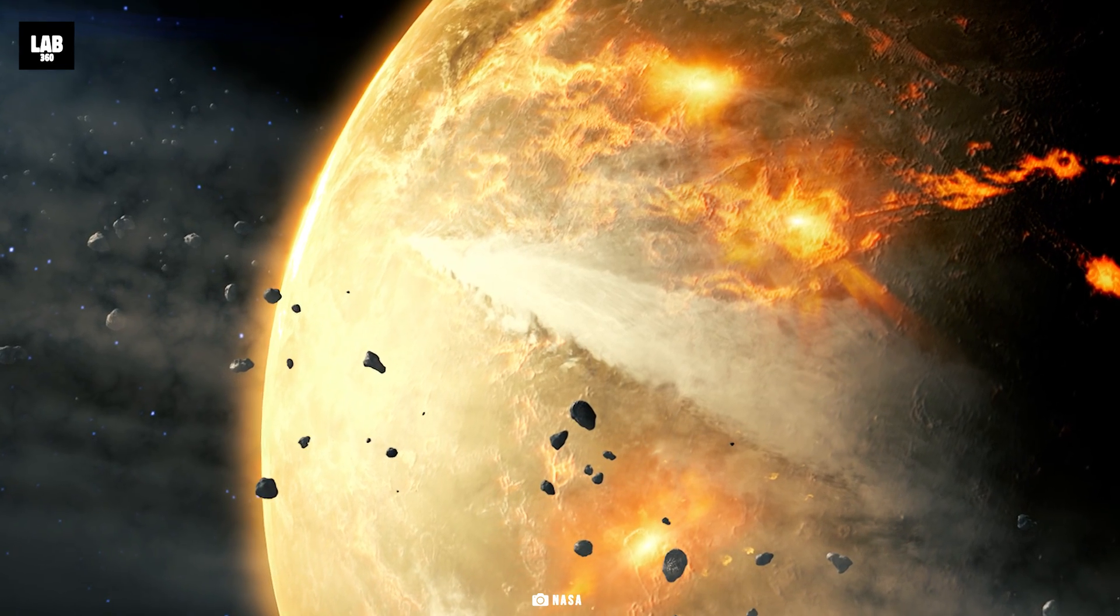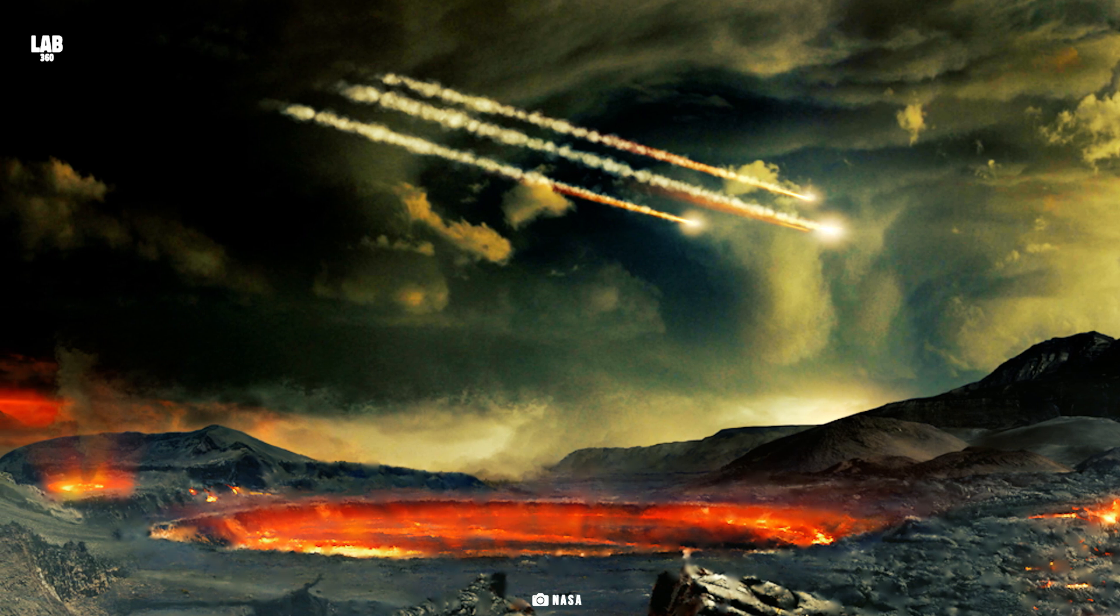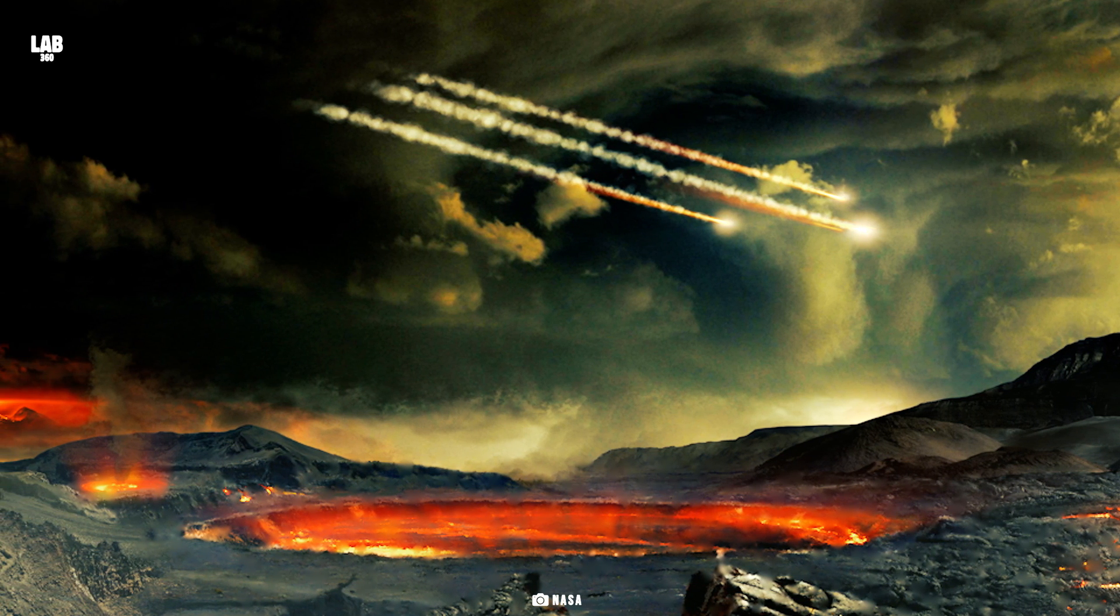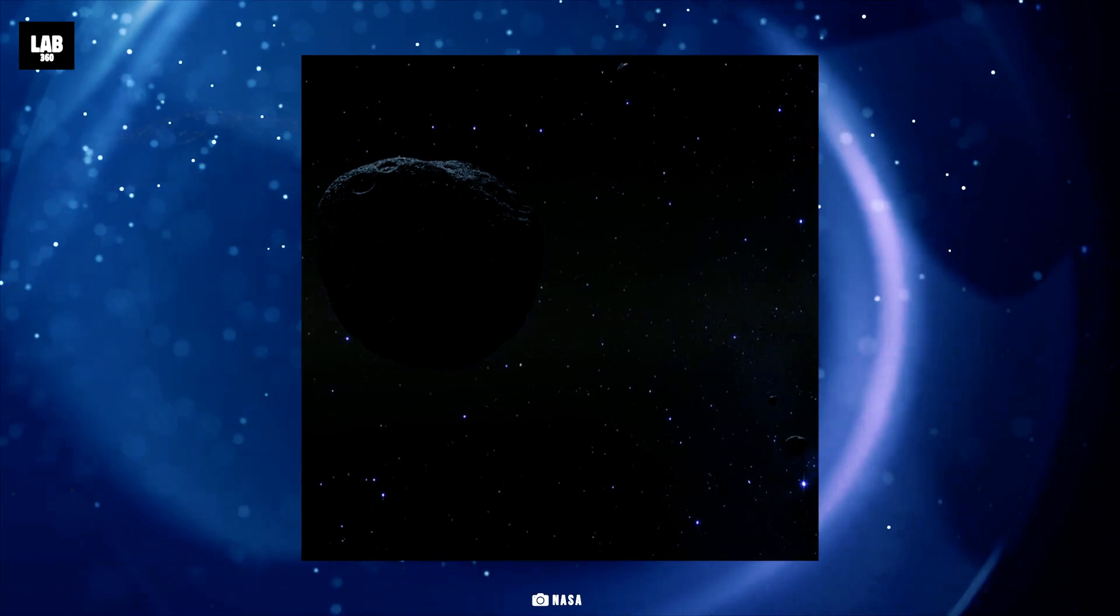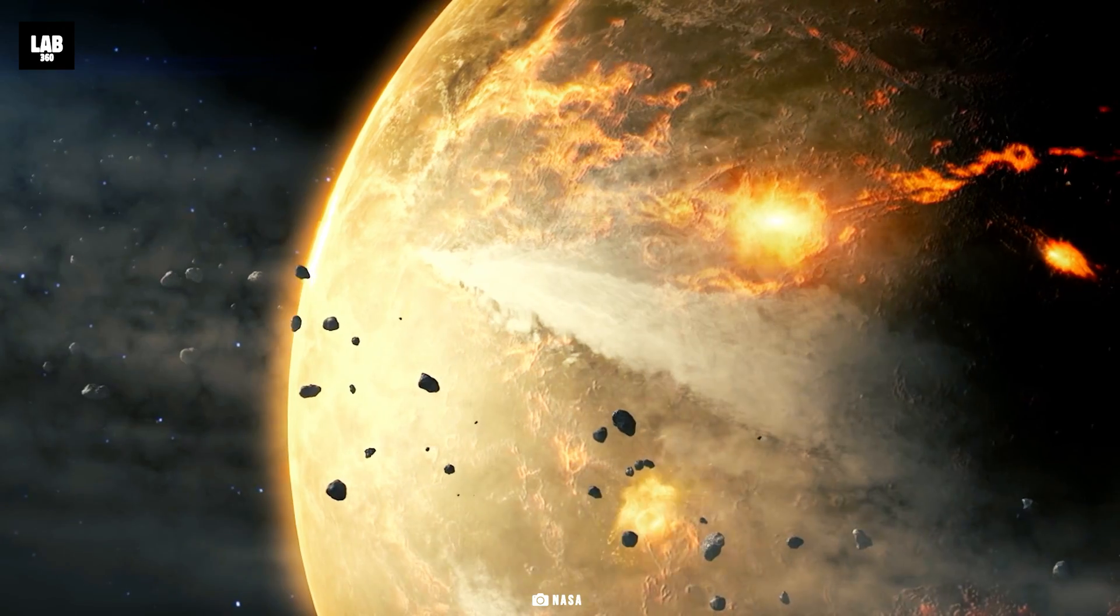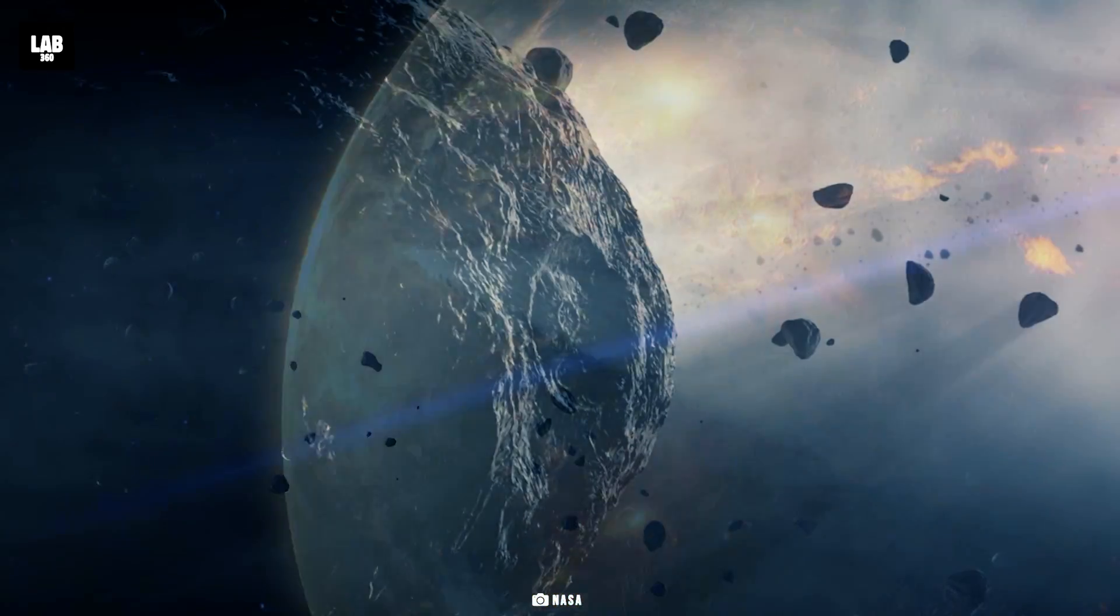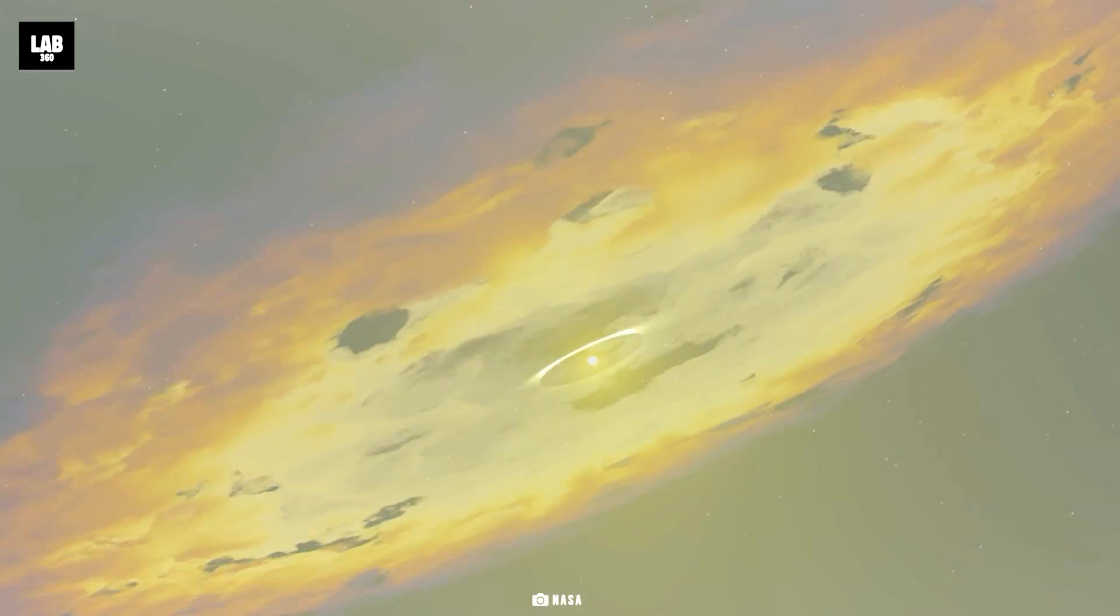Bennu is one of the most potentially hazardous asteroids with a high probability of impacting the Earth late in the 22nd century, around the year 2182. It is about one-third of a mile wide at its equator. It is touted to be an ancient relic of our solar system's early days, containing more than 4.5 billion years of history.